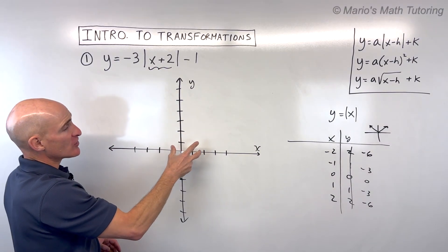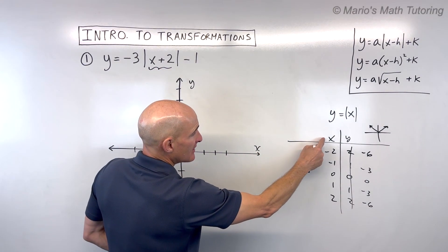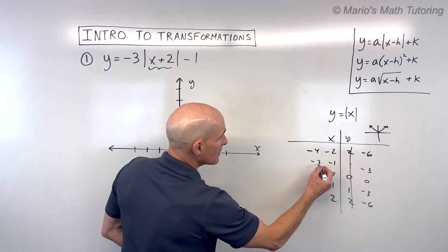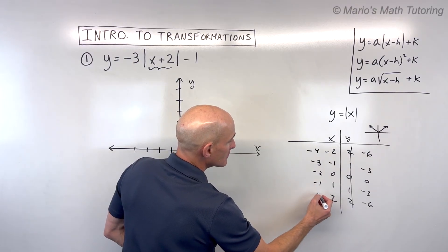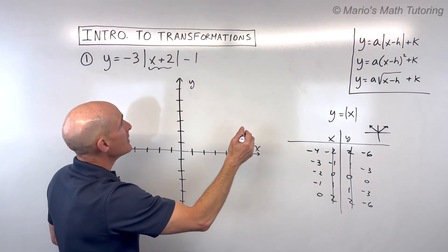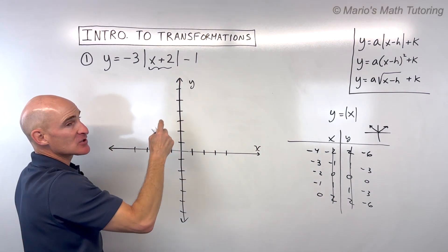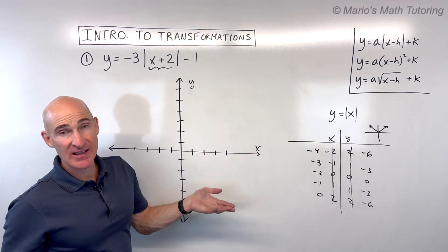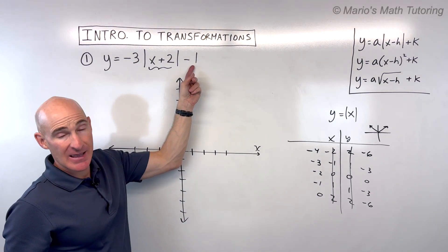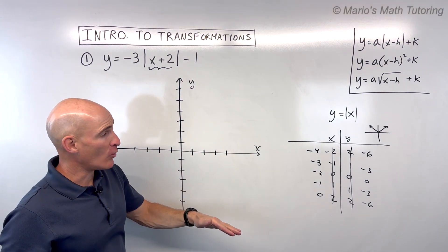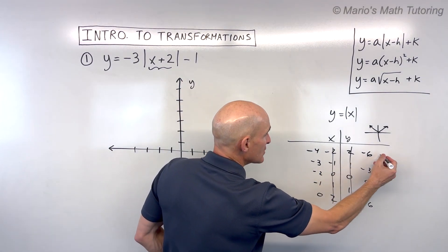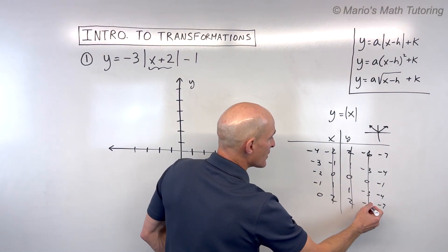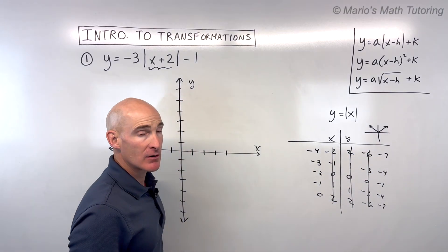The plus two is shifting the graph left two, affecting the x values, so I'm going to subtract two from all of the x coordinates. Then lastly, the minus one — it's not grouped with the x, so it's going to affect the y values. It's adding or subtracting, so that's a shift. Minus one is going to shift it down one, meaning I subtract one from each of the y values. Cross out the old ones — now we have the coordinates of our new points.